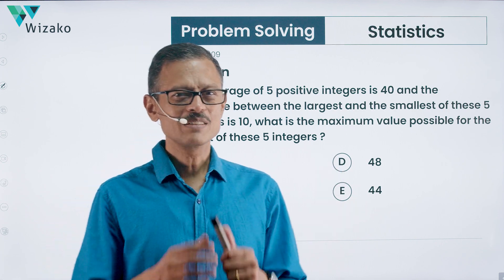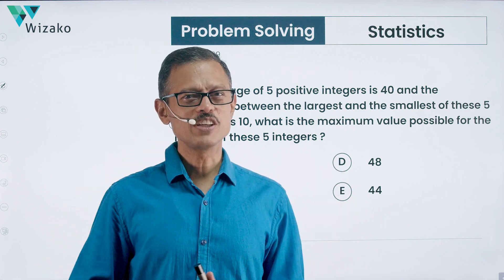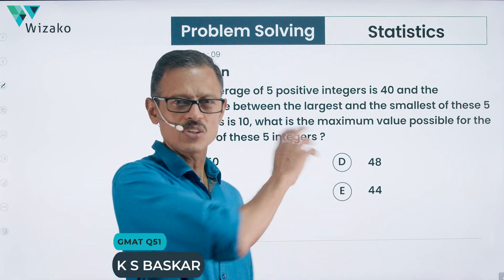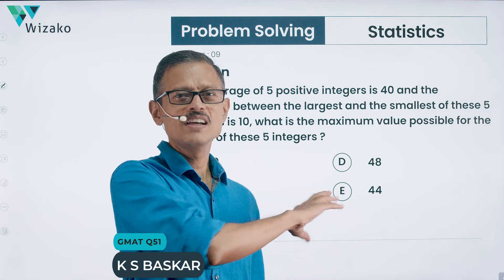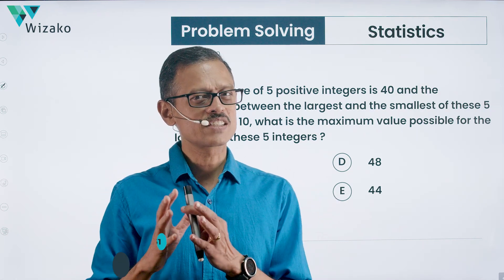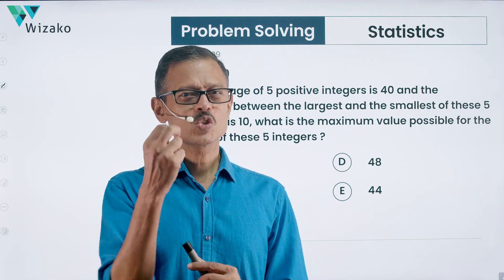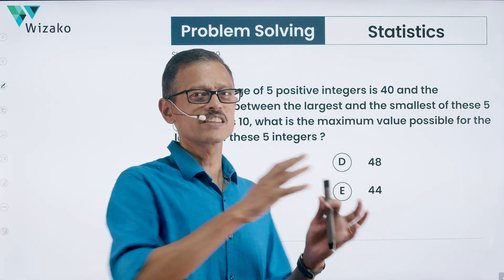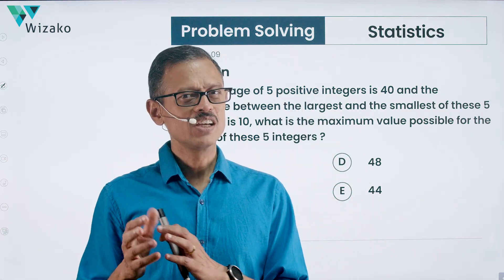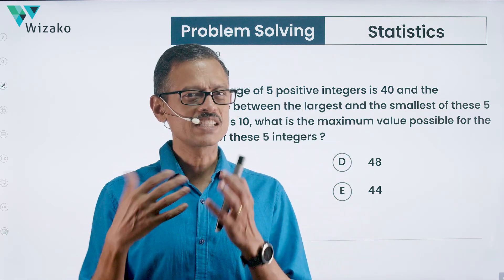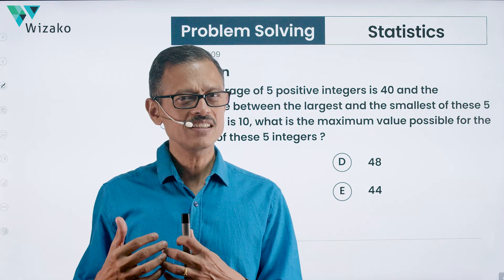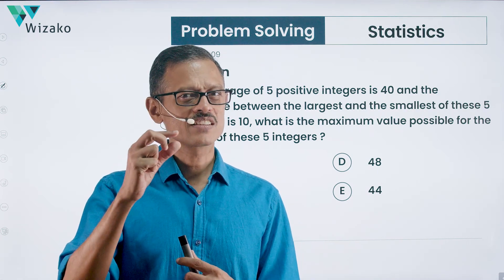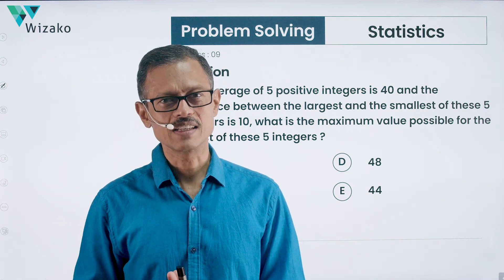Hi all. This is a medium difficulty GMAT problem-solving question from Statistics and Averages. Let's solve this question. I followed this question up with a bonus question, just tweaked a little bit from what is stated here. You can use the same concept to solve this question and accommodate those differences to solve the bonus question as well.